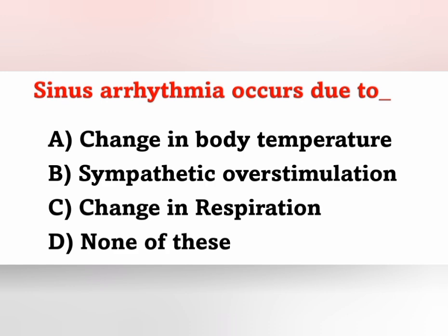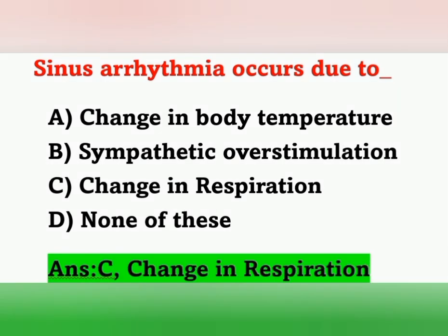Next question: Sinus arrhythmia occurs due to — A) Change in body temperature, B) Sympathetic stimulation, C) Change in respiration, D) None of these. Sinus arrhythmia occurs due to change in respiration. Option C is the correct answer.